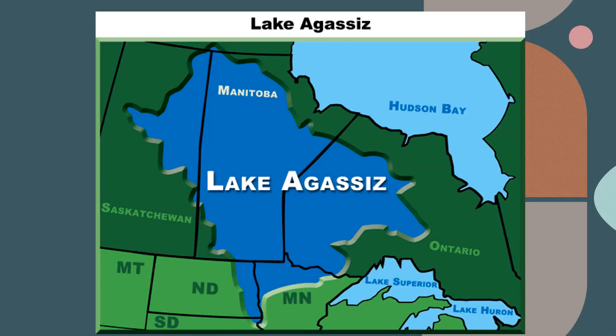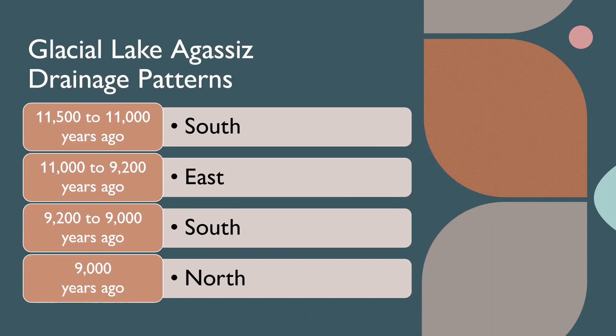The Laurentide Ice Sheet did not collapse all at once. Rather, it advanced and retreated, leaving behind glacial moraine dams and ice dams that influenced the way the lake drained. In addition, as the glacier was retreating to the north, it prevented the water from draining that way, which meant that water had to find other outlets. These timelines are close estimates of where the lake drained over the past 12,000 years. Let's look at each of these directional changes.